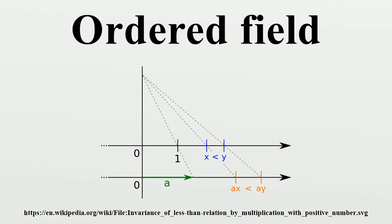Positive cone: A prepositive cone or pre-ordering of a field F is a subset P of F that has the following properties. For X and Y in P, both X plus Y and XY are in P.